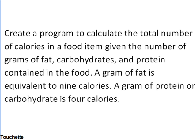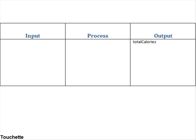Given that problem statement, let's fill in our IPO chart. First things first, what are they asking us for? The total number of calories. So let's fill that in — total calories — and we have our output variable.